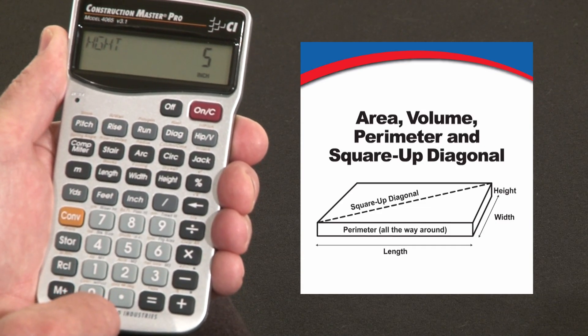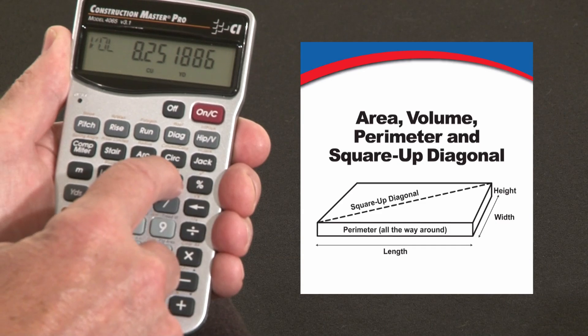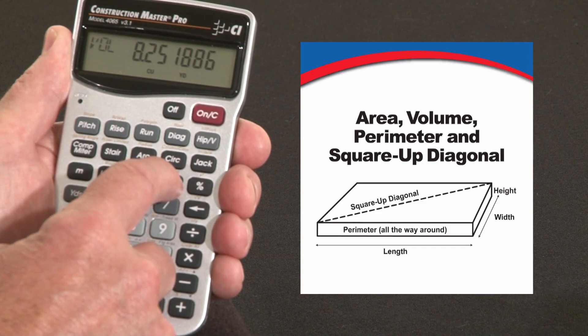So now it's all set to give us a whole series of answers. You can go back to the height key and it gives us our volume, 8.25 cubic yards.